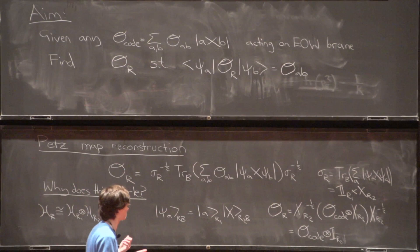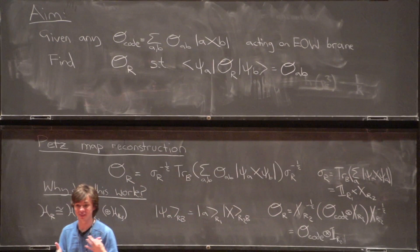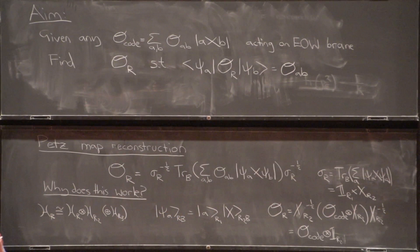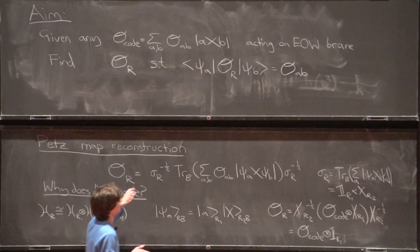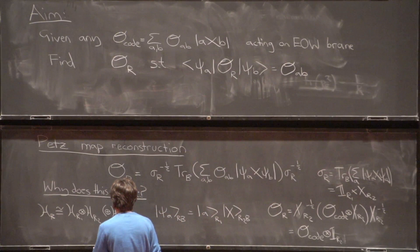That motivates why the Petz map can work and will work whenever something works. But we're not really done, because we don't know whether anything works except by these indirect quantum information arguments. So what we want to do is just evaluate this Petz operator using the path integral and see that it does the thing we wanted it to.